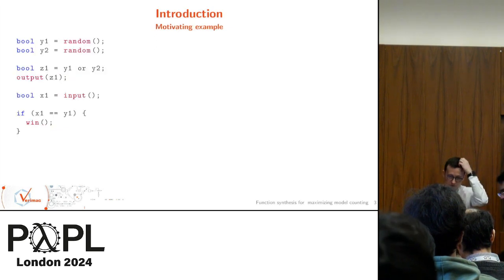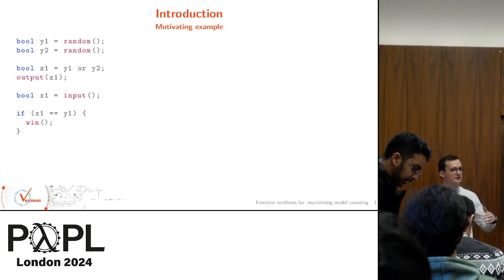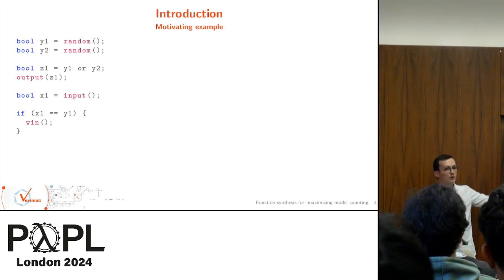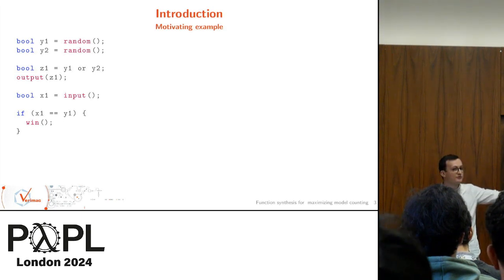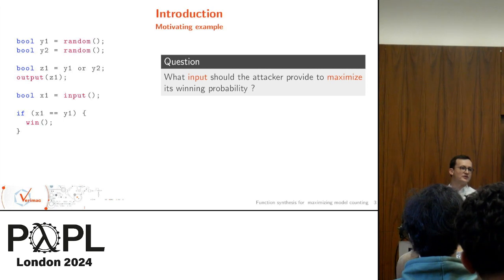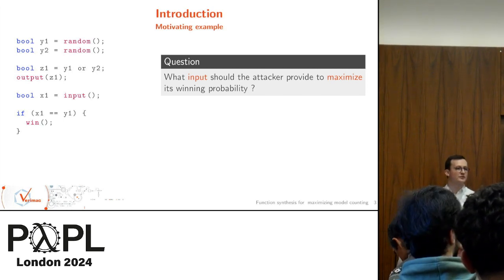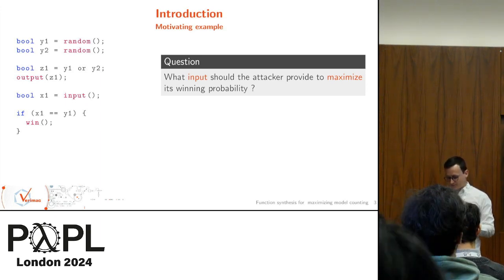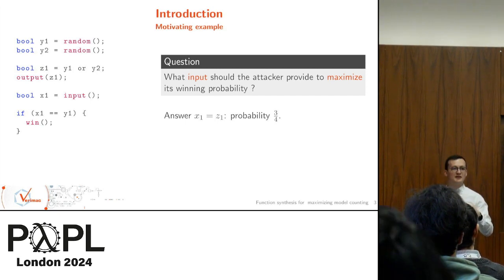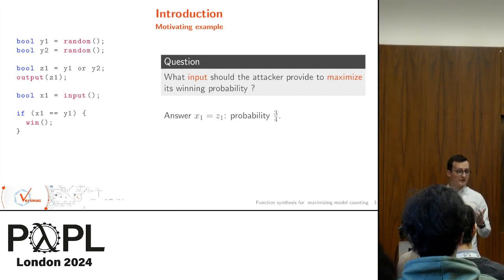This basically allows the attacker to actually know what a given output to the network means in terms of the program's behavior. Let's just jump into an example. All the examples will be at the Boolean level just for simplification. This program picks two random numbers, computes the OR of these two random Boolean values, outputs that to the network, asks for an input from the network, and the attacker wins if it reaches this point, that is equivalent to actually guessing one of the two values.